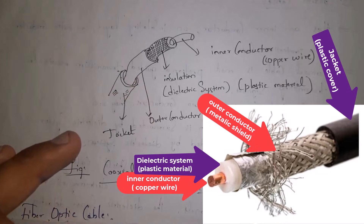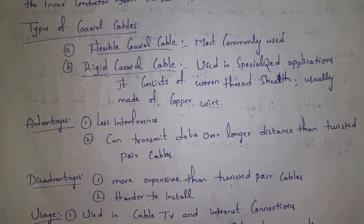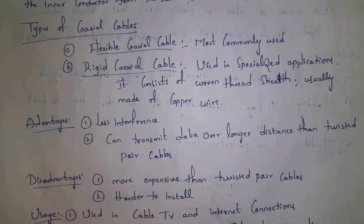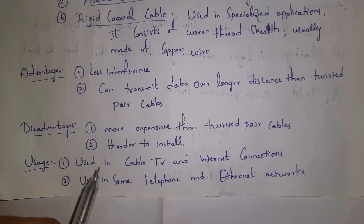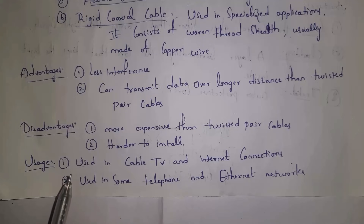Coaxial cables are classified into two types: flexible coaxial cable and rigid coaxial cable. Advantages: less interference, so messages pass smoothly, and it can transmit data over longer distances compared to twisted pair cables. Disadvantages: more expensive than twisted pair cables and harder to install. Coaxial cables are used in cable TVs, internet connections, and some telephone and Ethernet networks.